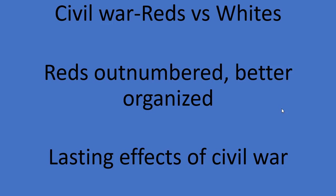Although the Reds were greatly outnumbered, they controlled important cities such as Moscow. They were also more organized, as Leon Trotsky rebuilt the army to five million men. The Reds had effectively won the war by 1920, but sporadic resistance and fighting continued for two more years. The terrible violence and ruthlessness demonstrated by both sides left deep scars and lasting resentments throughout Russian society.